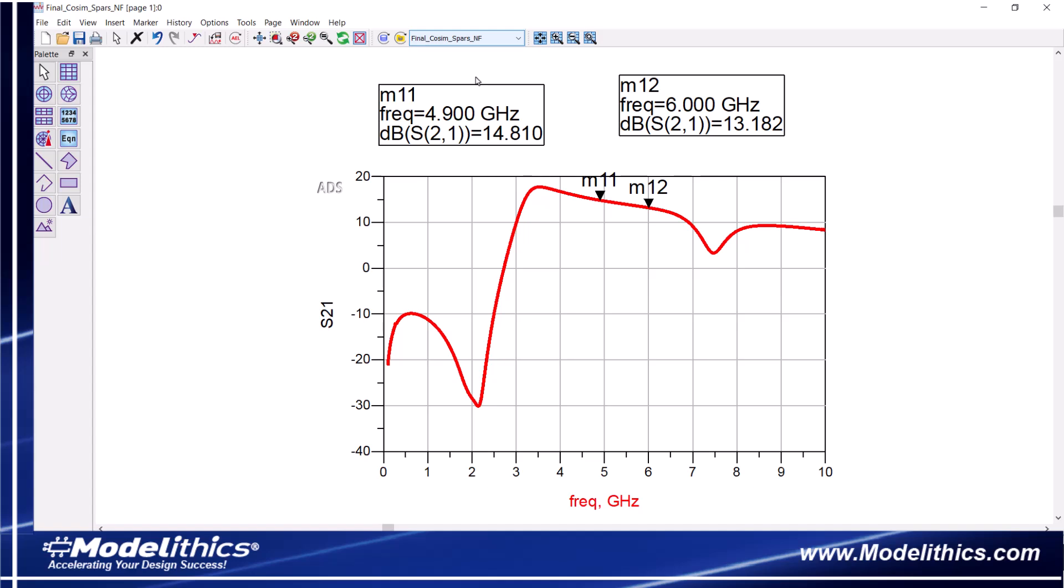This is the simulated gain of the LNA. We see that the gain ranges from 14.8 to 13.2 dB over the intended operating frequency range. Now, let's compare these simulated results with measured data.